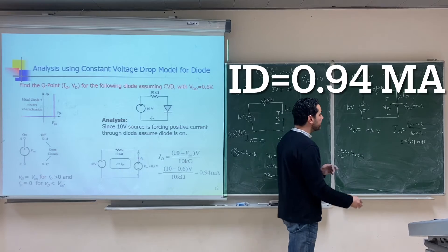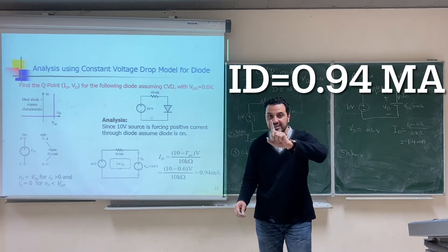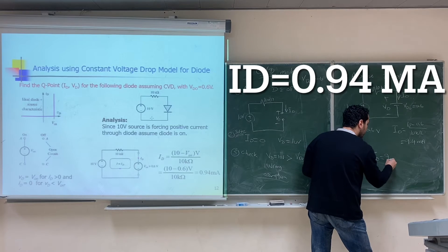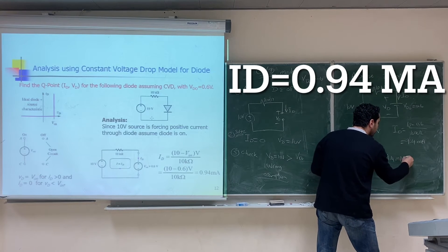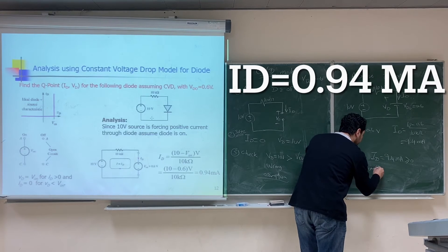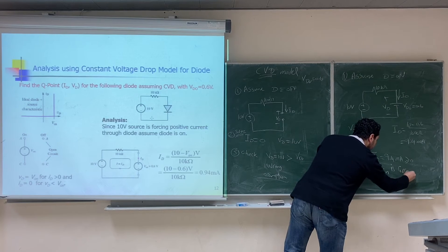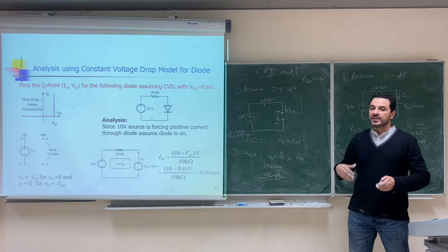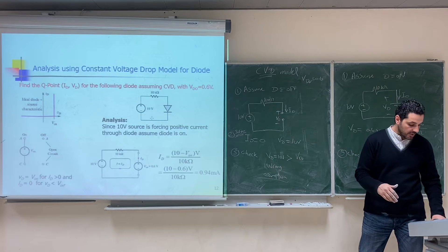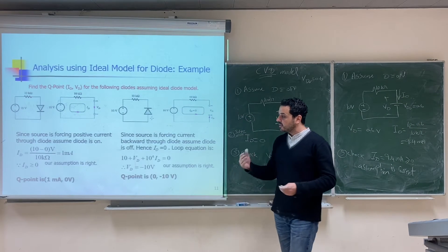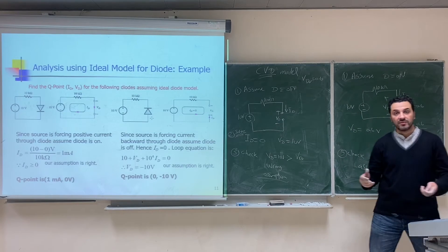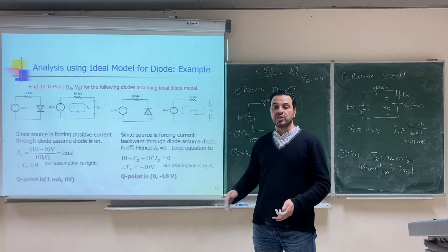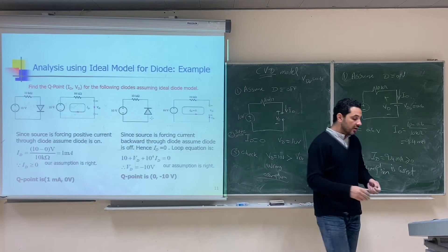We check: since we assumed the diode is on, we verify I_D ≥ 0. We found I_D = 0.94mA, which is greater than zero, so our assumption is correct and the problem is solved. You can also try the piecewise linear model on both versions of this circuit as additional practice with all three diode models.